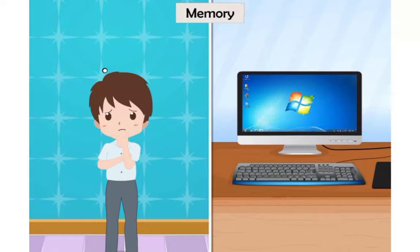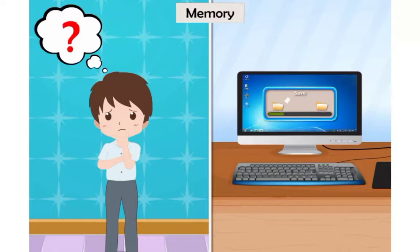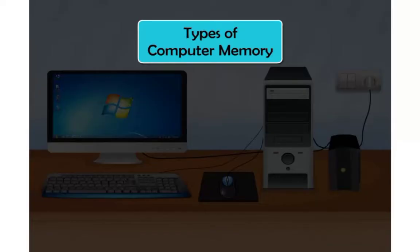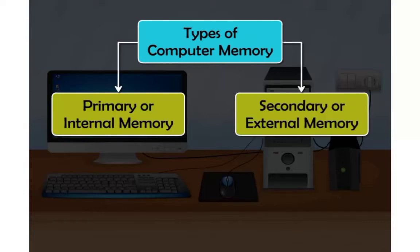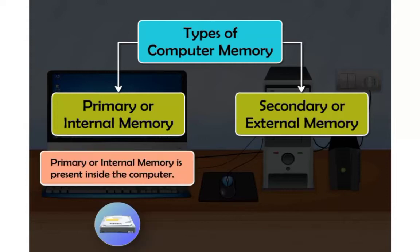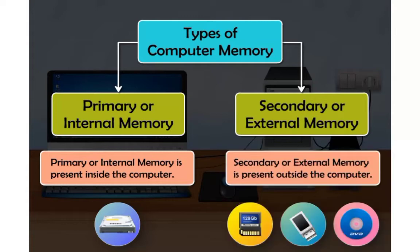We may forget sometimes, but a computer never forgets. Types of Computer Memory: A computer memory is of two types — primary or internal memory and secondary or external memory. Primary or internal memory is present inside the computer. Secondary or external memory is present outside the computer.